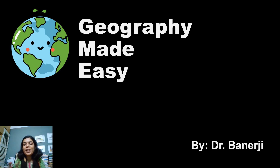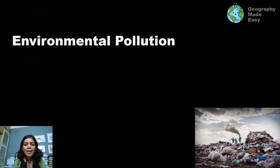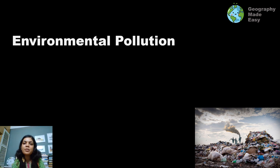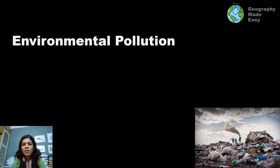Hello and welcome to another episode of Geography Made Easy. In these videos we try to make difficult geographical topics easy. Today we are going to talk about environmental pollution. This chapter is part of Calcutta University's CVAC1 environmental studies paper, but it is a general chapter helpful for anyone studying environment, environmental science, environmental studies, or preparing for competitive examinations such as UPSC. It is also part of biogeography, so this video will be helpful for everyone.